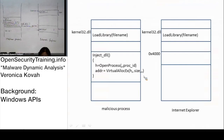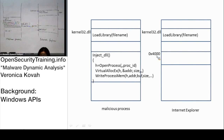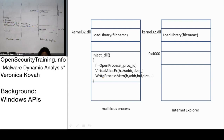Since the address parameter is optional, once the malicious process calls virtual alloc ex with the process handle and the size, Windows returns hex 4000. Once the malicious process gets hex 4000, it then uses that address in order to write something. So 4000 is returned by virtual alloc ex, then it's immediately used by write process memory.